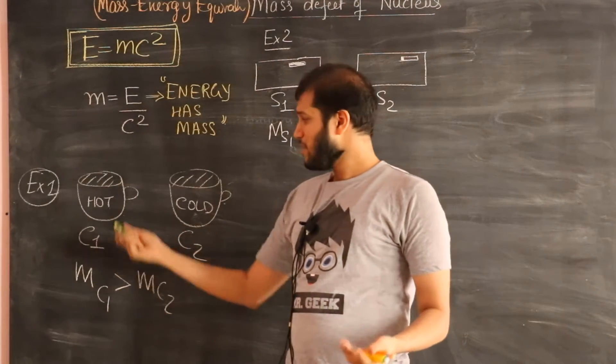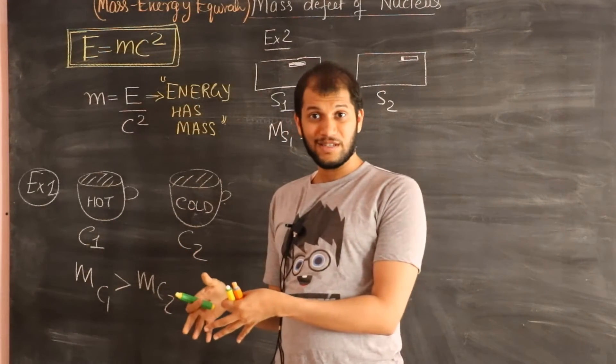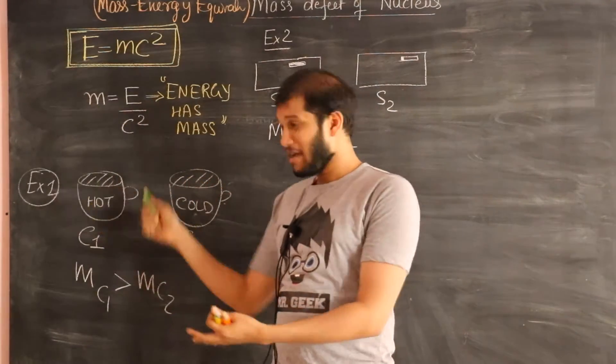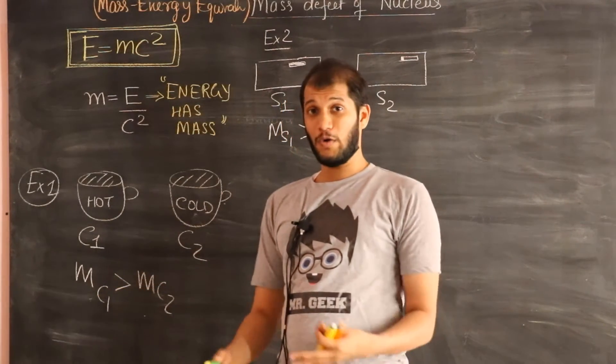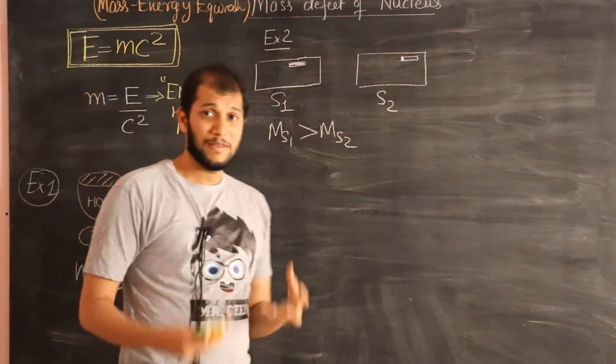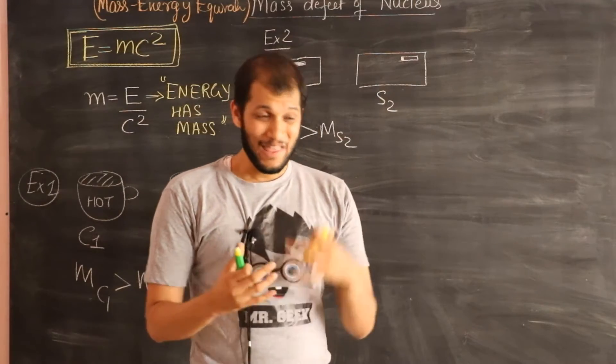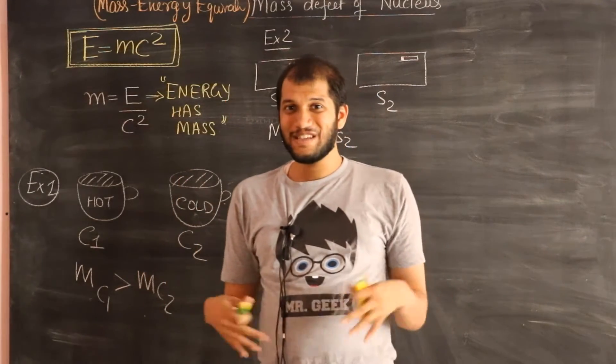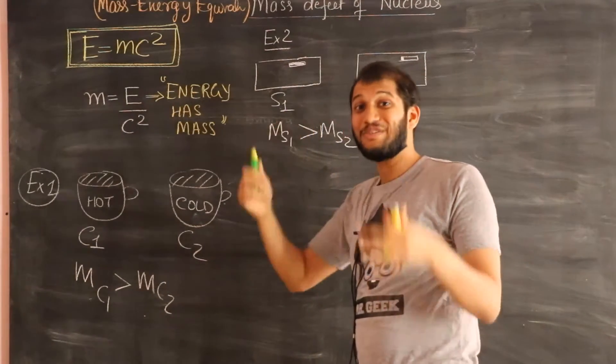And now it's very easy to understand these two examples. Think about this hot coffee. Although the number of particles are identical, this coffee has more thermal energy. And that extra energy manifests itself as the part of my coffee's mass. It's the extra mass that makes the mass of my hot coffee more than the mass of my cold coffee. And the same thing is going on over here. In the morning, the battery of my phone has more chemical energy. And throughout the day, the energy is going out. And as the energy is going out, we are not weighing that energy anymore.